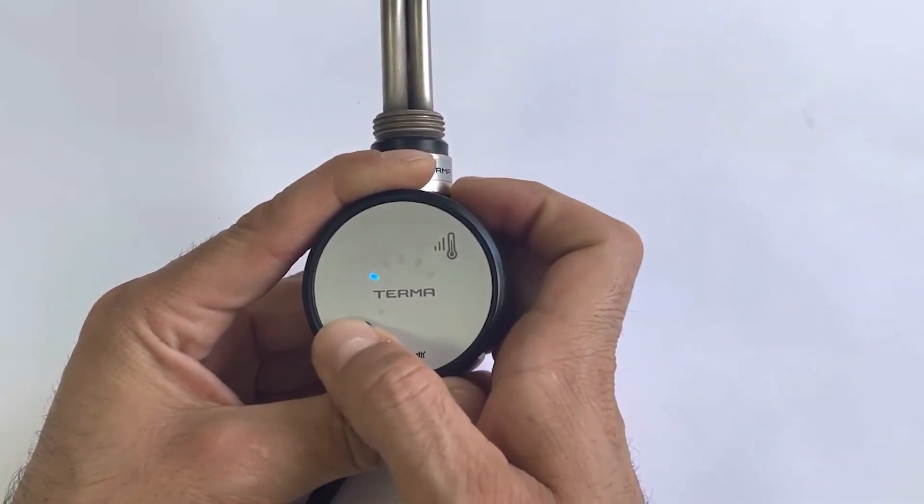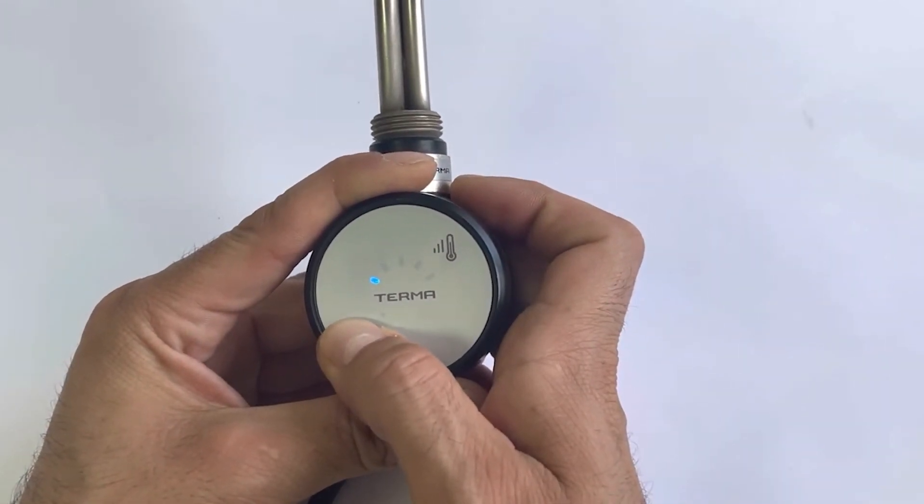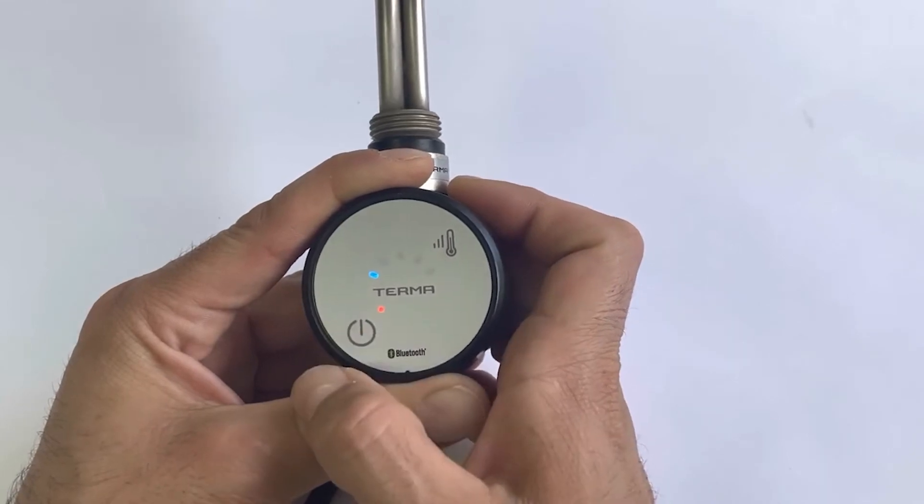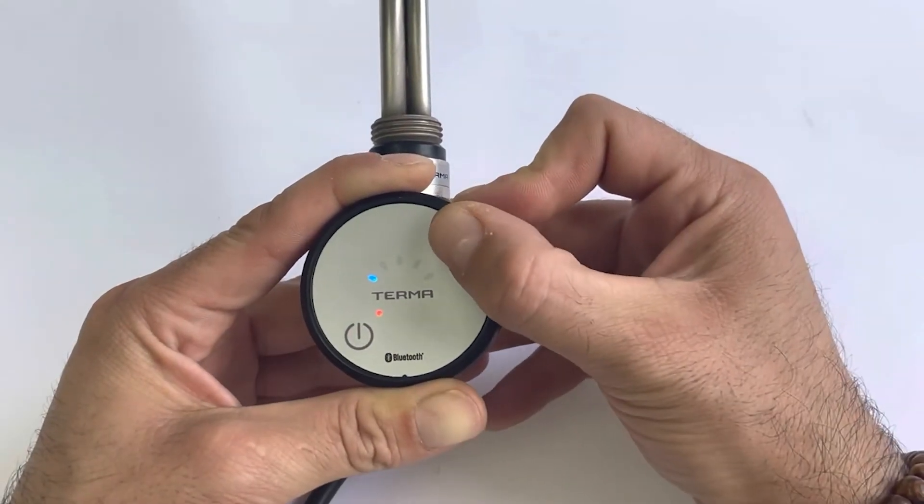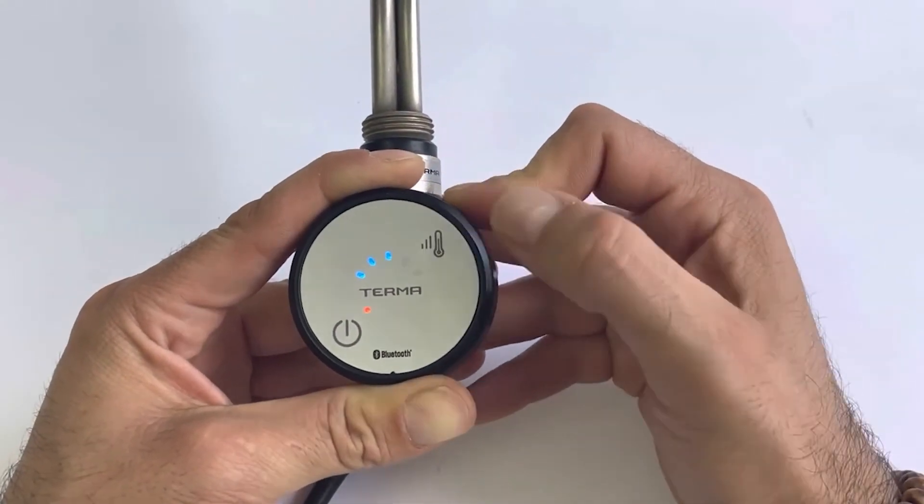To activate the booster, we need to press and hold the on and off button. When the red light comes on, we can change the period of the boost via the temperature button.